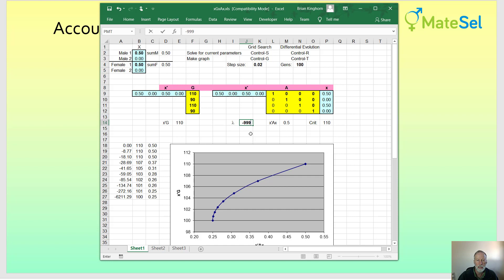If we now look and see what's happening if we give essentially overriding emphasis to co-ancestry, we see that the contributions are now spread equally among the four individuals in order to maximize genetic diversity.